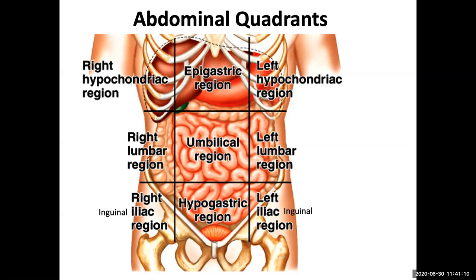Why do we want to utilize these quadrants and regions? The reason is so that we're able to identify possible organs that might be impacted simply by knowing what area of the abdomen we have issues with. For example, which region might be affected by appendicitis, a urinary bladder infection, or gallbladder pains? The regions provide localization without having to go in surgically or scan the patient through CT or MRI, and they also give us a point of reference if we choose to scan these areas.